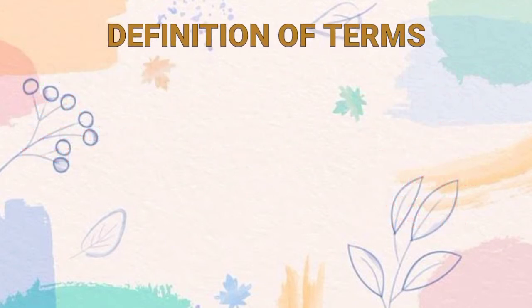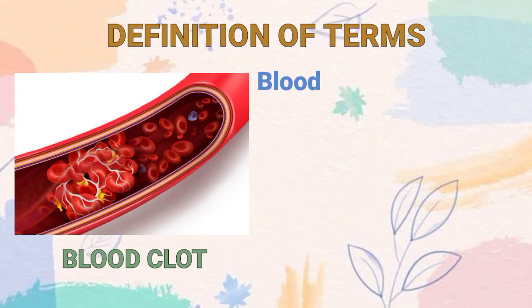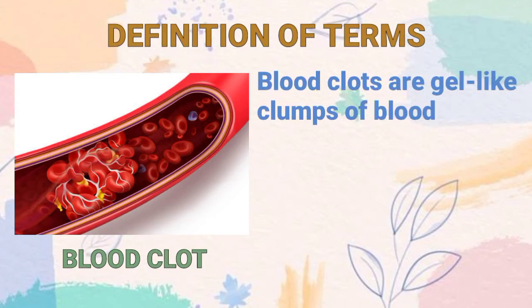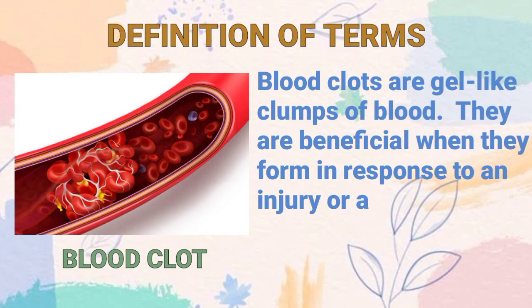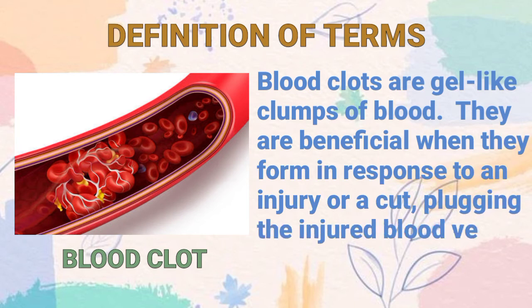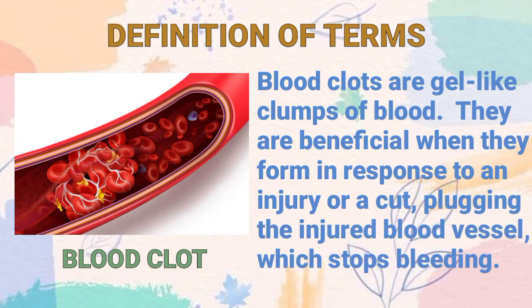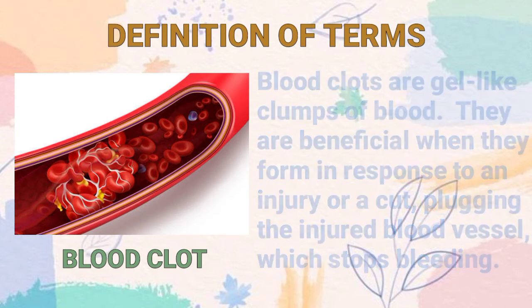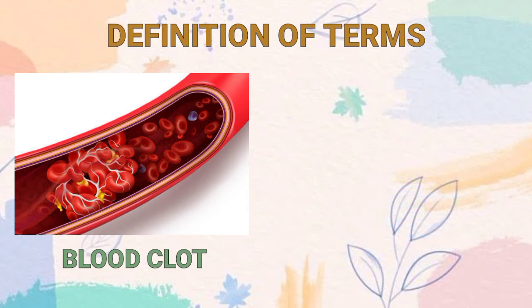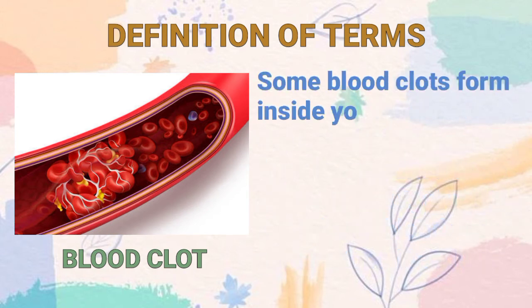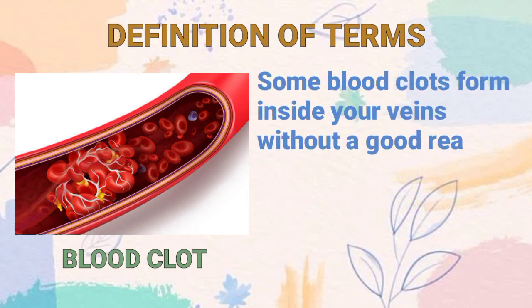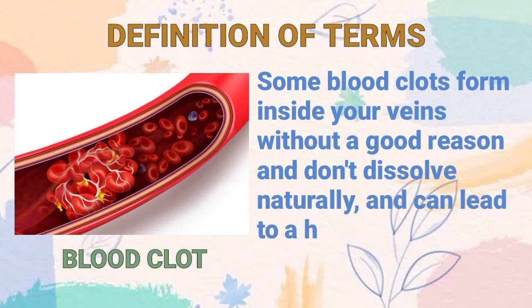Definition of terms. Blood clots are gel-like clumps of blood. They are beneficial when they form in response to an injury or a cut, plugging the injured blood vessel which stops bleeding. However, some blood clots form inside your veins without a good reason and don't dissolve naturally, and can lead to a heart attack or stroke.